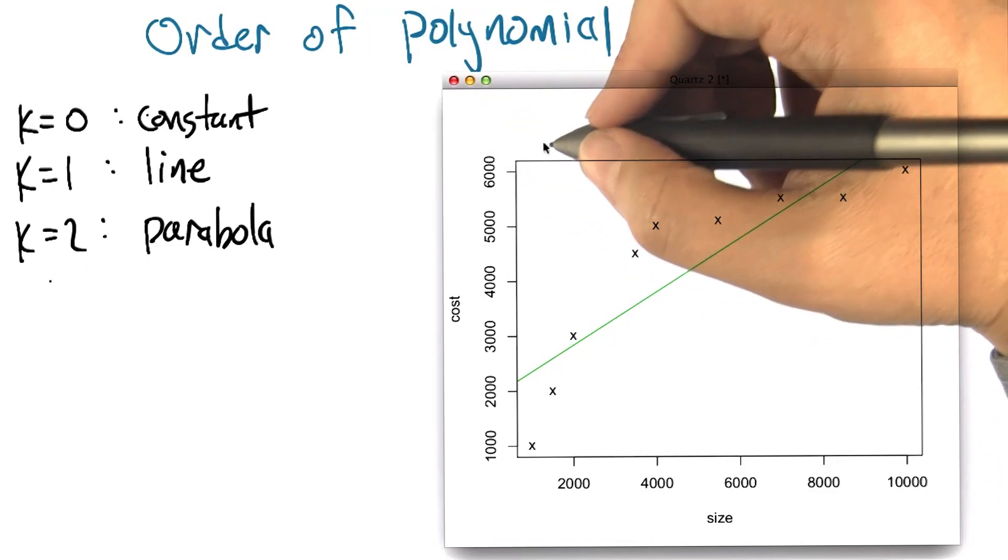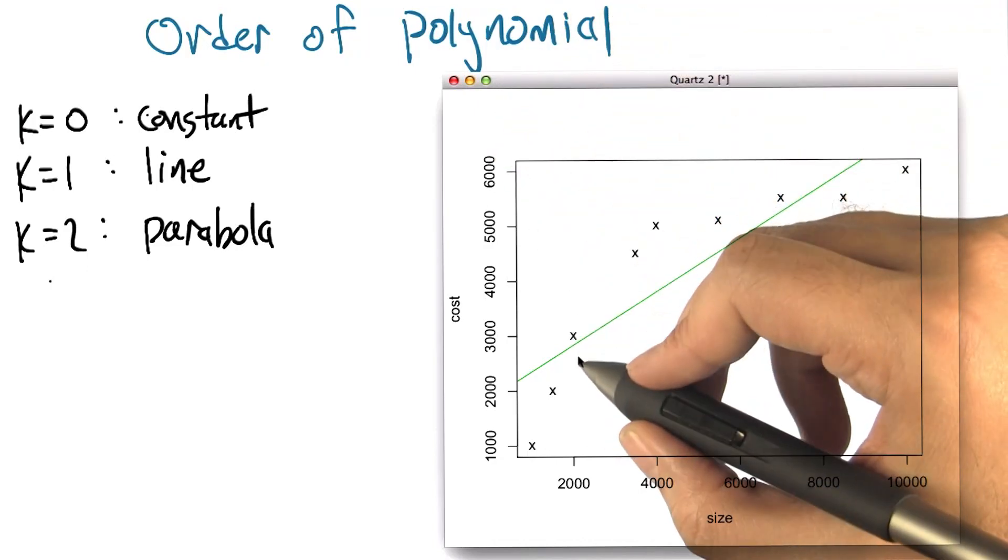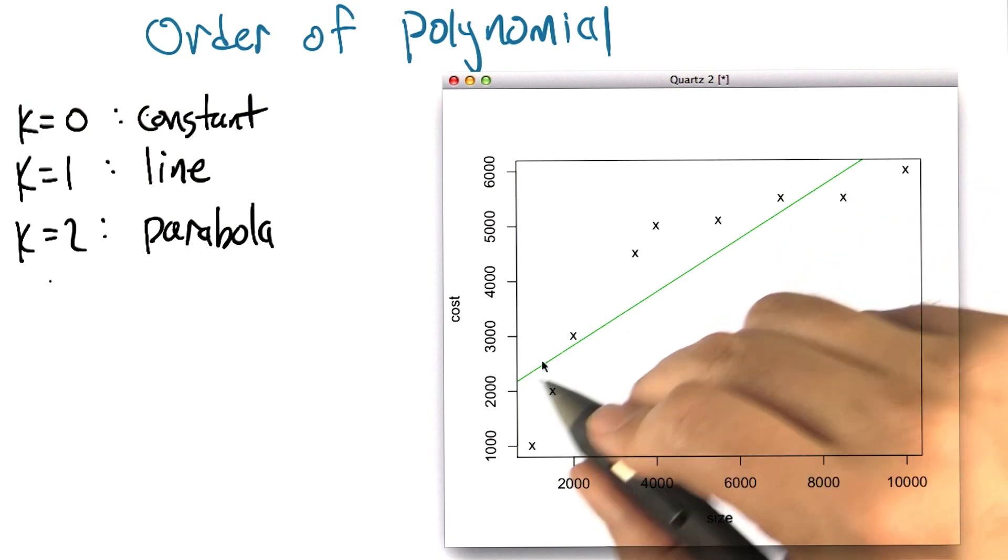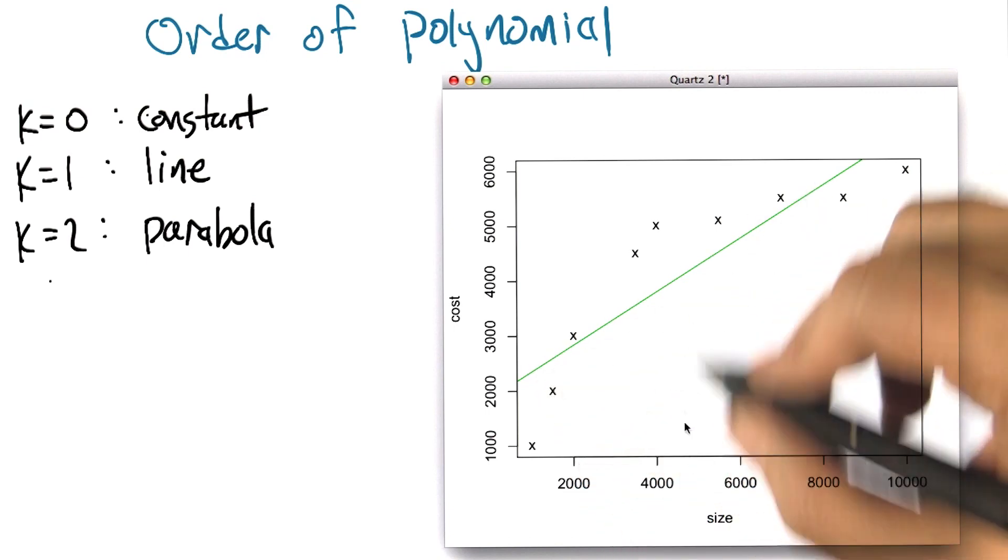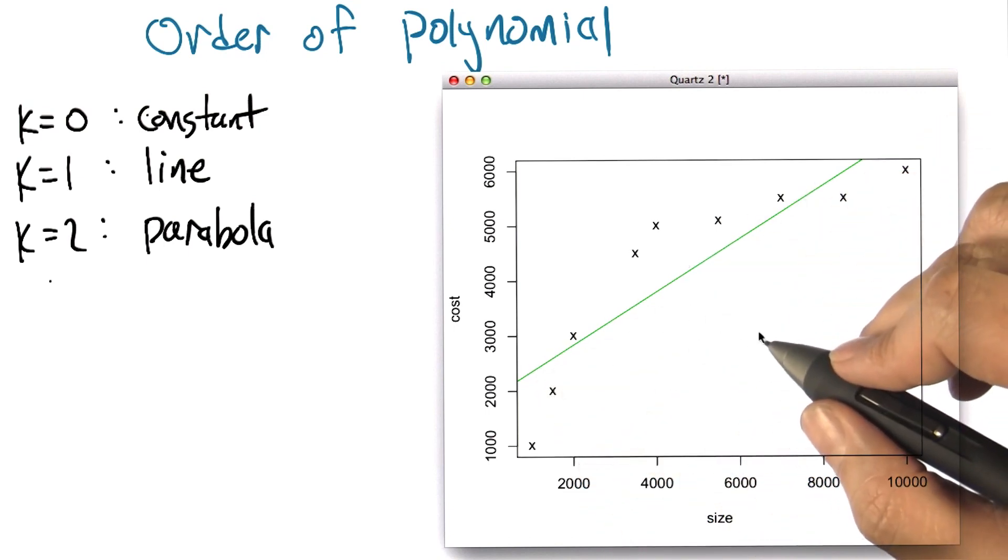All right, so now let's get back to our data set that we were looking at before. So again, the idea is that we're going to try to find a way of predicting the value for various points along the way in this curve.